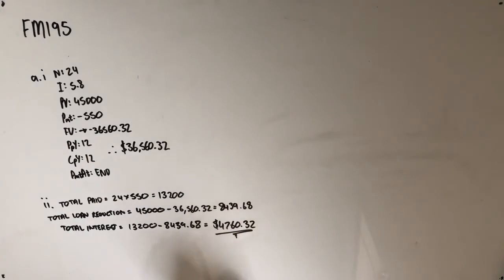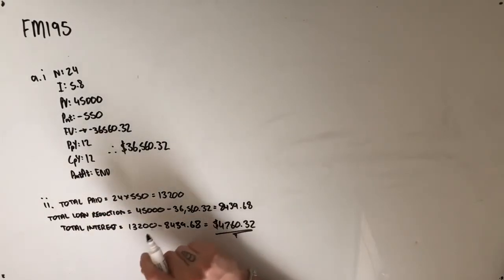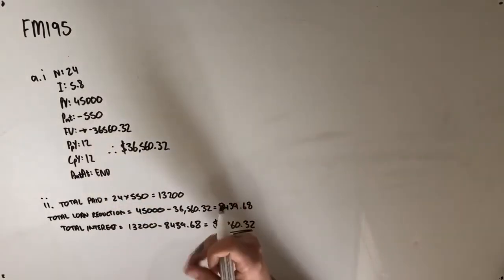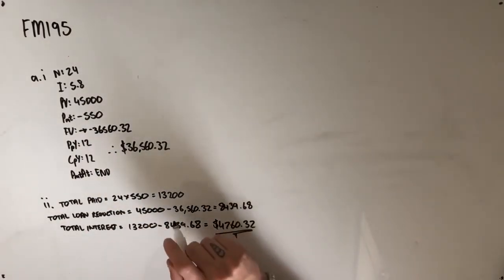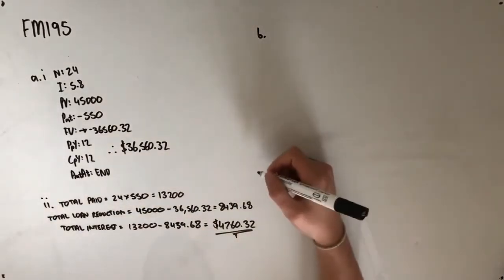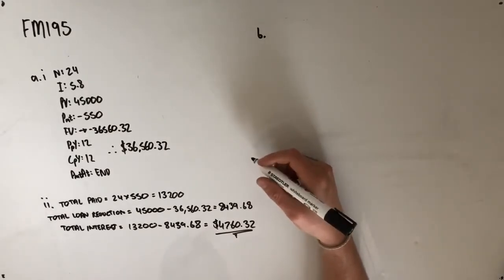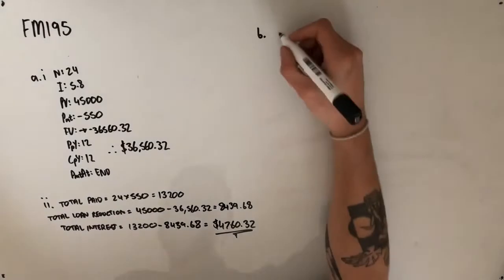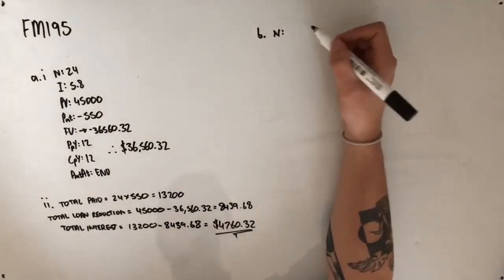Now we're given a little bit more of the story. After four years, Sam will make a lump sum payment of P dollars in order to reduce the balance of his loan. The lump sum payment will ensure that Sam's loan is fully repaid in a further two years. Sam's repayment amount remains at $550 per month, and the interest rate remains at 5.8% per annum compounding monthly. Part B says, what is the value of Sam's lump sum payment P dollars? Give your answer correct to the nearest dollar.